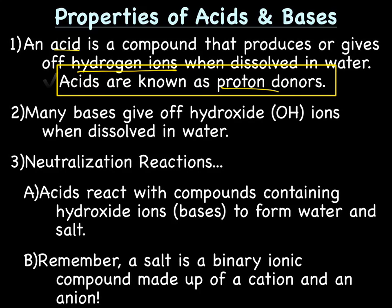So why proton donors? Let's talk about hydrogen for a minute. A hydrogen atom is made up of one proton and one electron. When a hydrogen becomes an ion, it loses an electron to become a 1+, which means it's made up only of a proton. Thus, sometimes acids are known as proton donors, because when they're releasing a hydrogen ion, they're really releasing a proton.